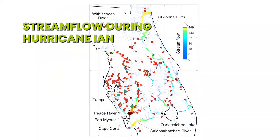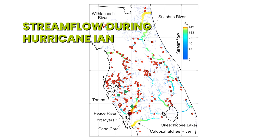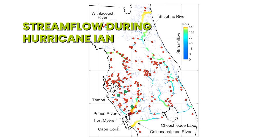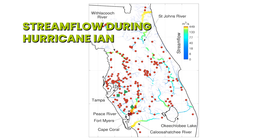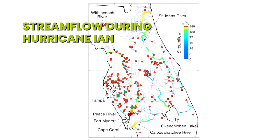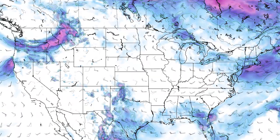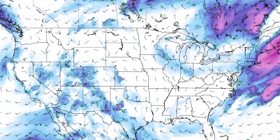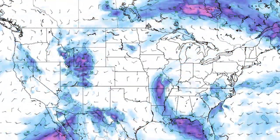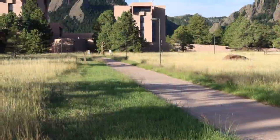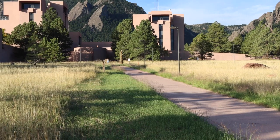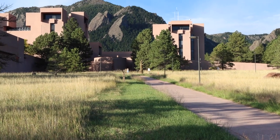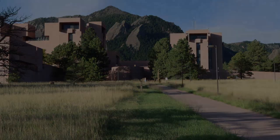We would like people to know that Ensemble Prediction Systems can be crucial, especially in extreme events. Ensemble Data Assimilation is one of the three key pieces of every weather forecast you see, and really a crucial point for all of NCAR science.